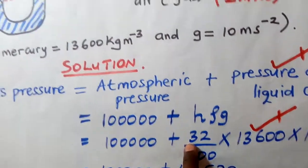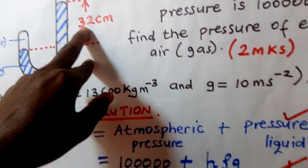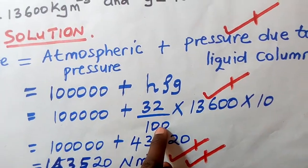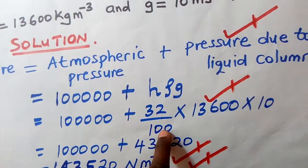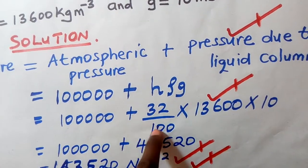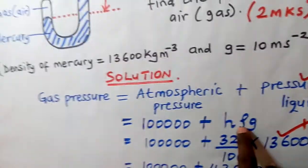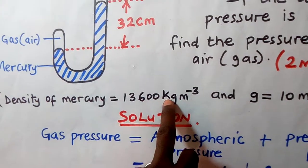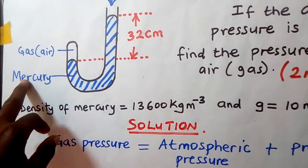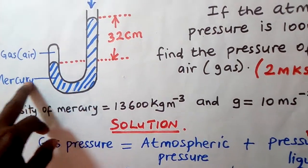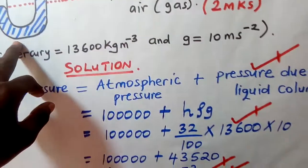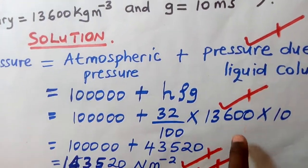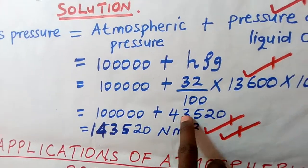The height given is 32 centimeters, which we convert to meters by dividing by 100, since one meter equals 100 centimeters. We then multiply by the density of the liquid in the tube. Since mercury is used here, we use the density of mercury, which is why it was provided. We then multiply by acceleration due to gravity, which is 10. Multiplying all of these together gives us the pressure due to the liquid column.